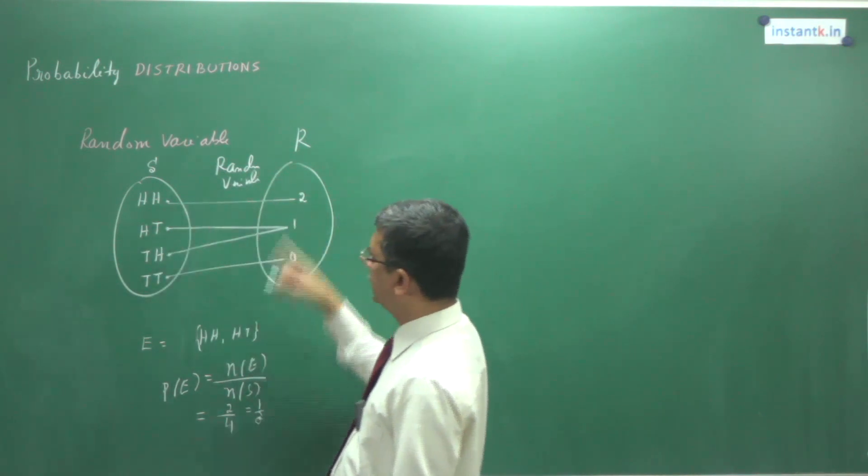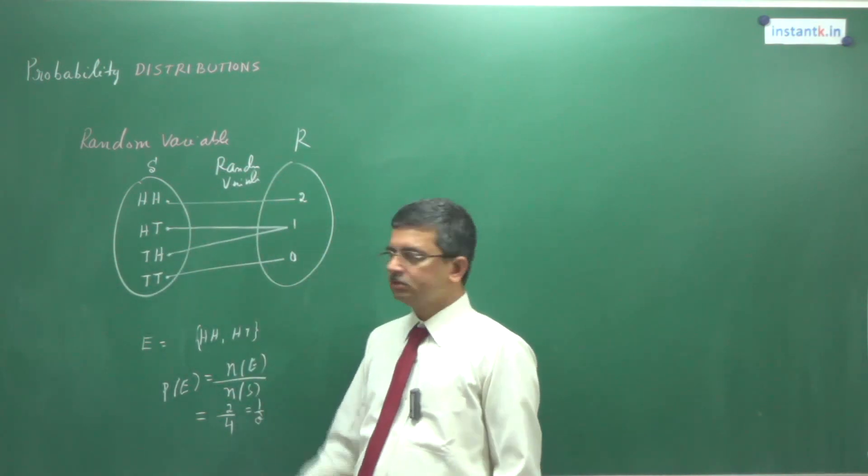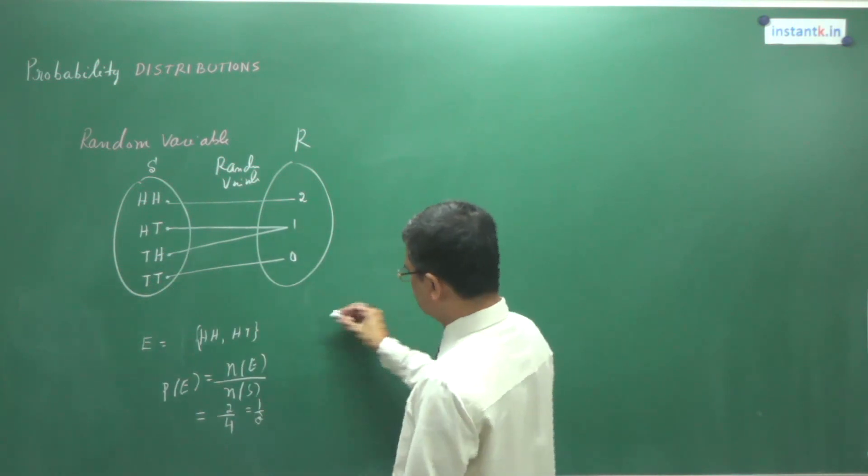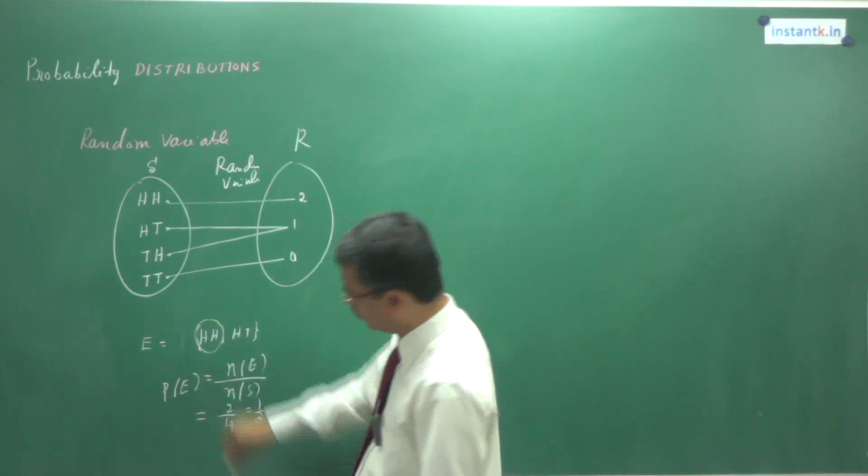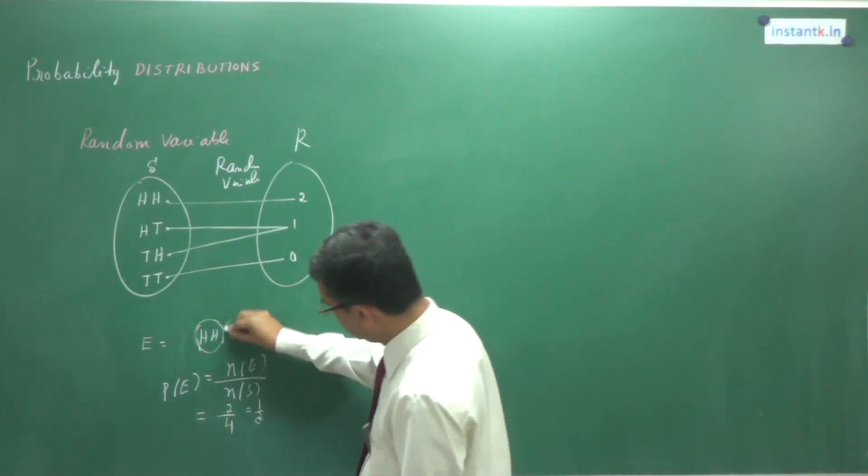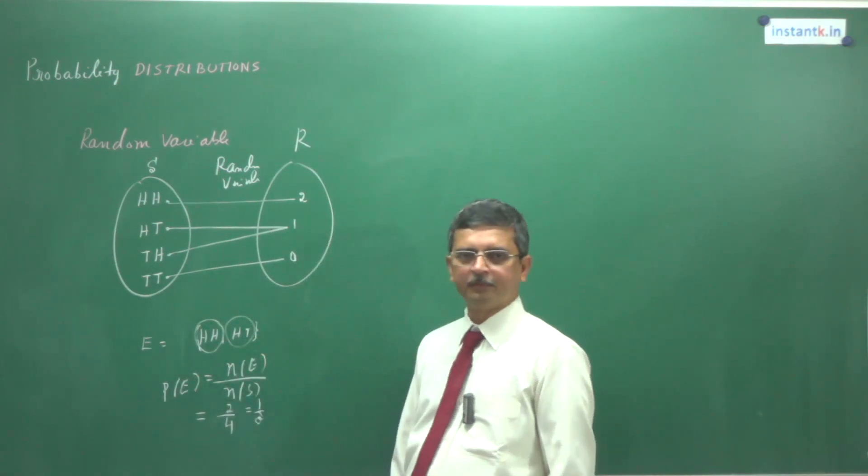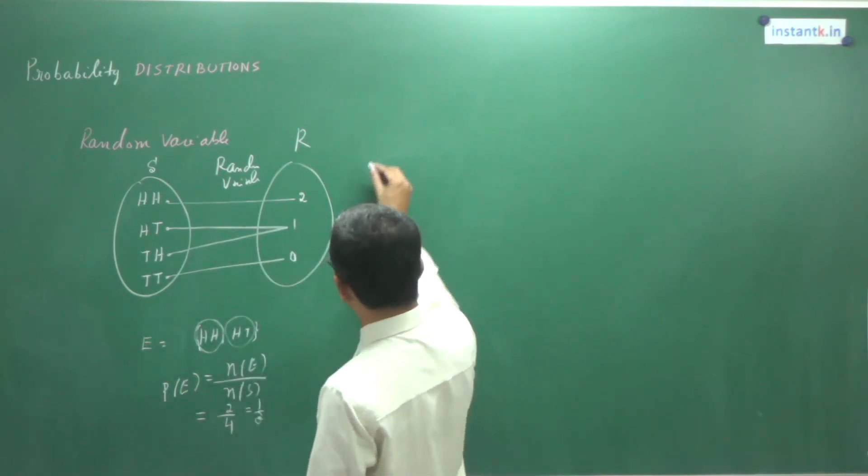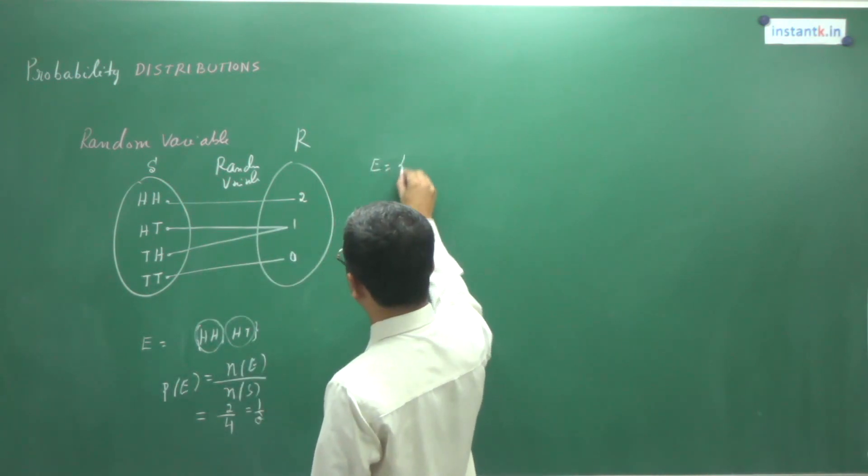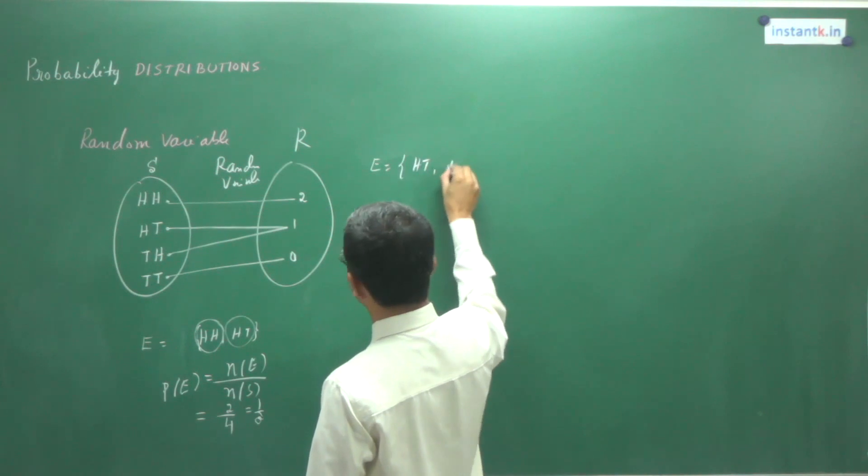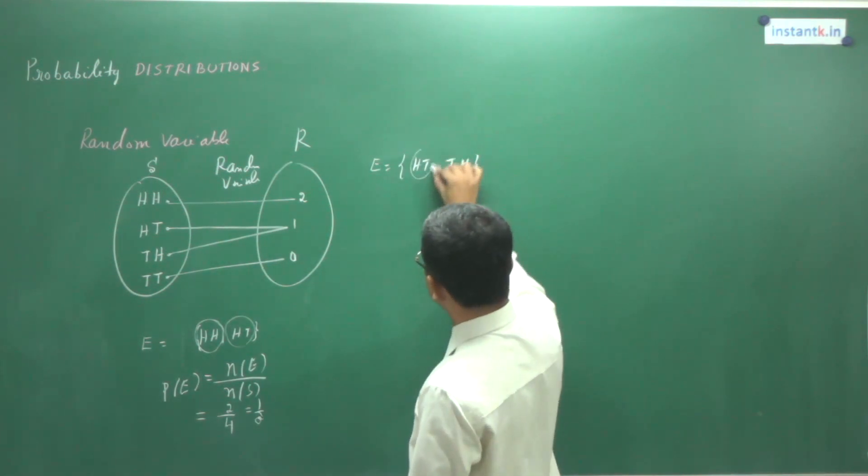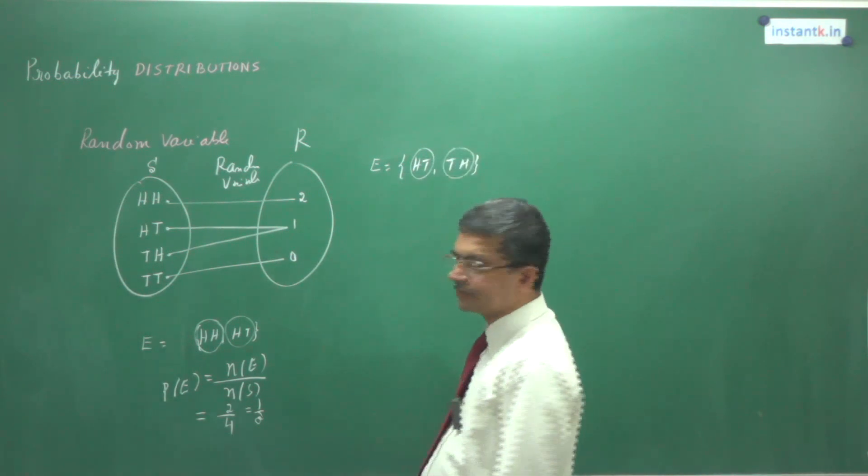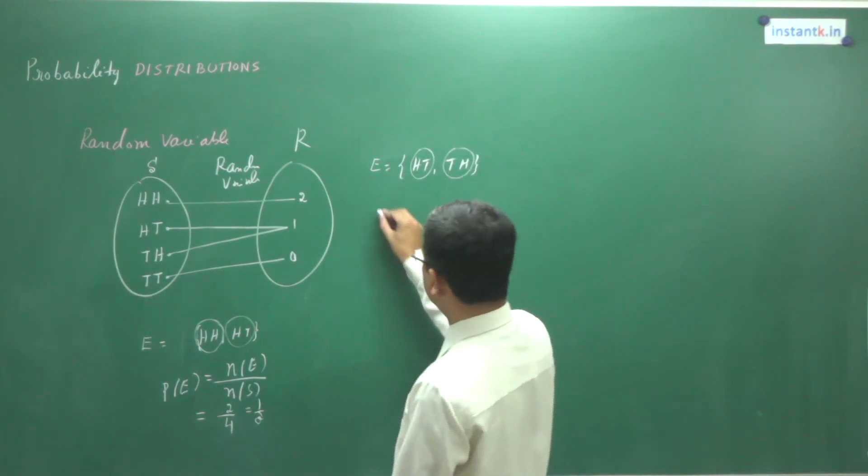A random variable I associated for each element of S. Now what is this? This contains 2 heads. This contains 1 head. Instead, suppose if I have an event like this: HT and TH. Only this event. What is this? This contains exactly 1 head. So I can write now the probability of X.